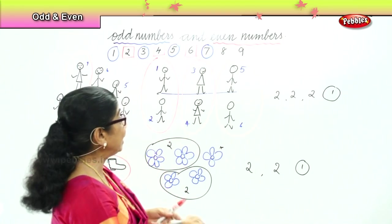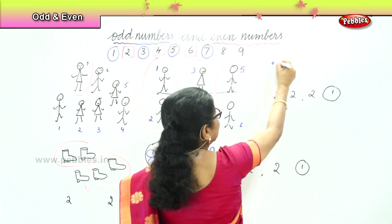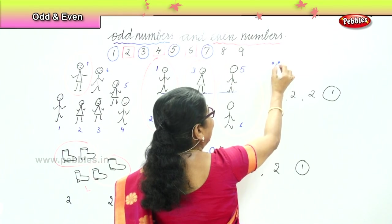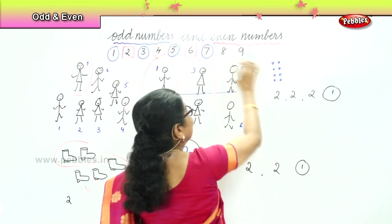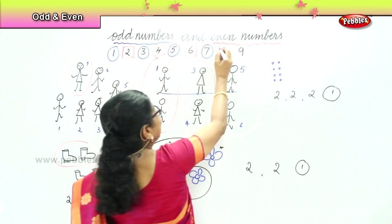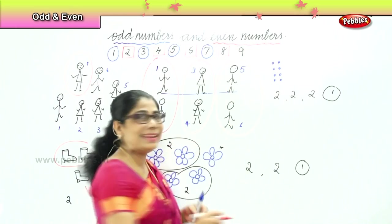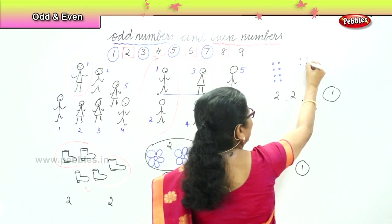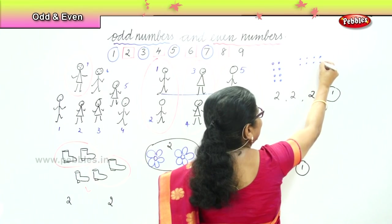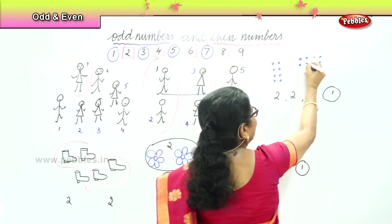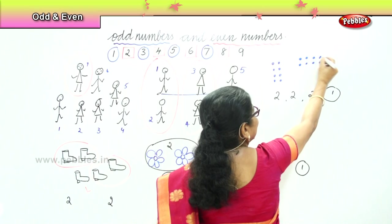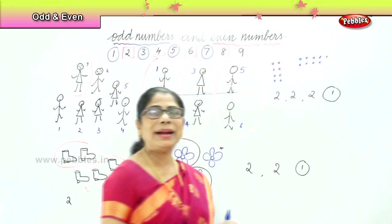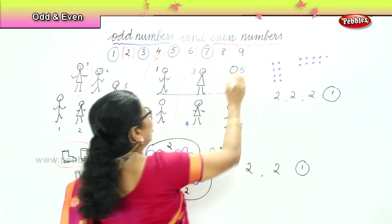Eight — let's say eight. One, two; one, two; one, two; one, two. It can be paired up, so it is an even number. Now let's take number nine: one, two, three, four, five, six, seven, eight, and nine. This can be paired up: one, two, three, four — and then one is left out. Therefore, nine is an odd number.